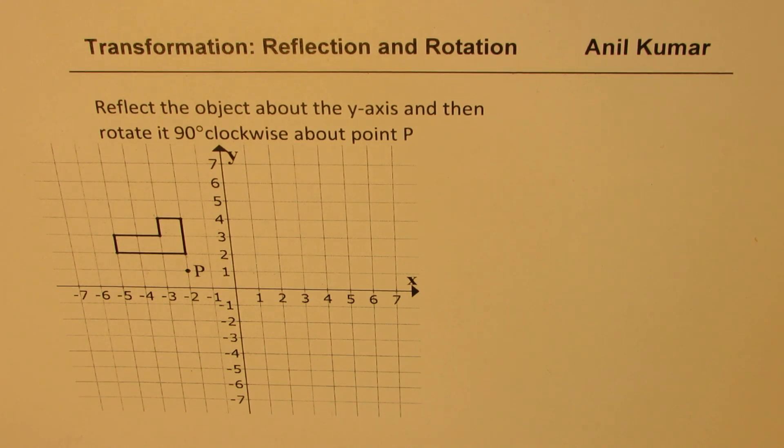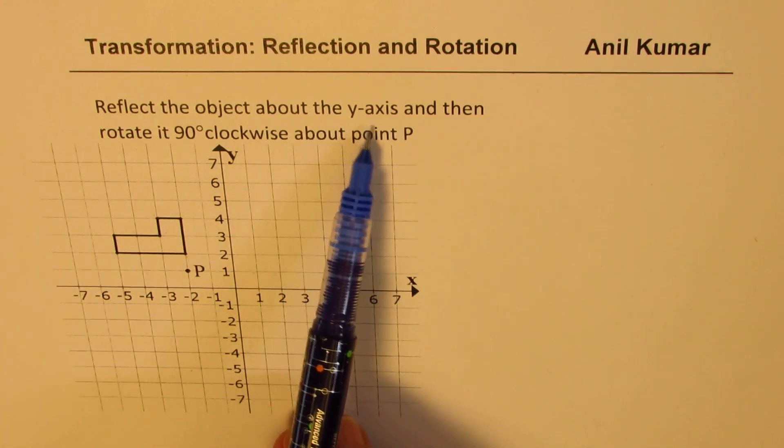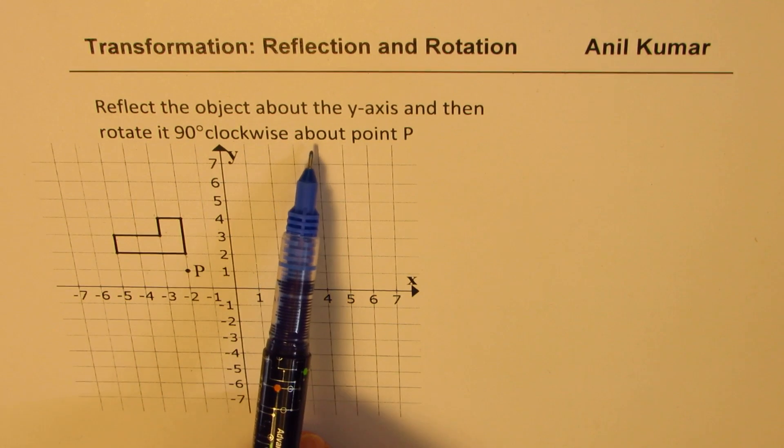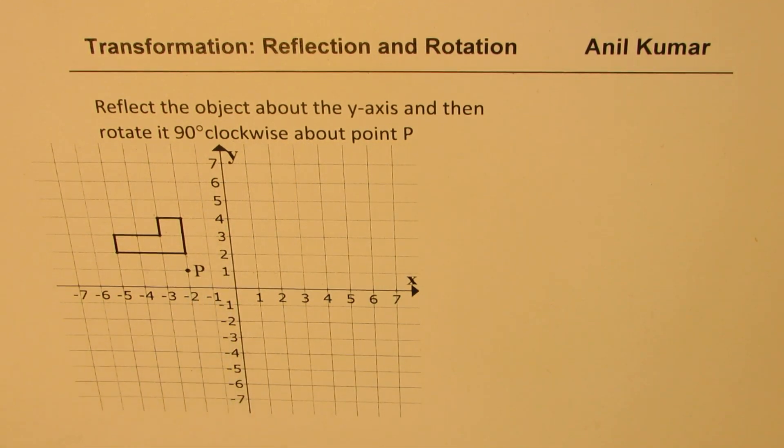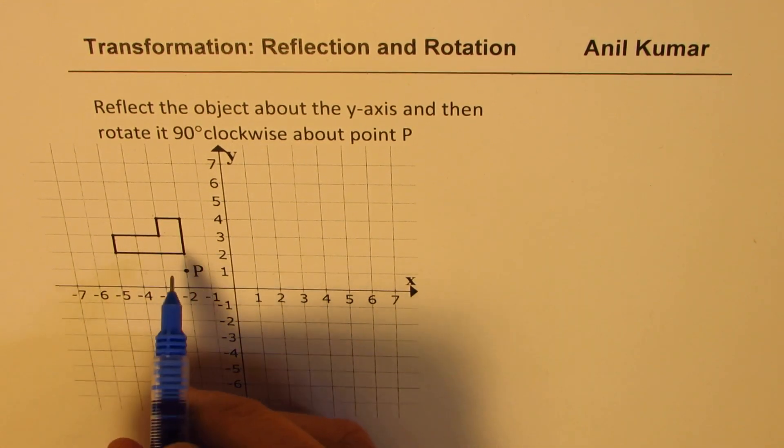So I have a couple of videos on this just to make you understand how to work with the coordinate points. So we'll take up an example which is very popular. We have an object in the shape of an L and we'll actually reflect the object about the y-axis and then rotate it 90 degrees clockwise about the point P. Now this is also very interesting. Rotation about an external point is not really covered in books. However, the question in the test is always a point outside the origin somewhere else. So another reason for providing a wrong answer. So we are going to address both issues now.